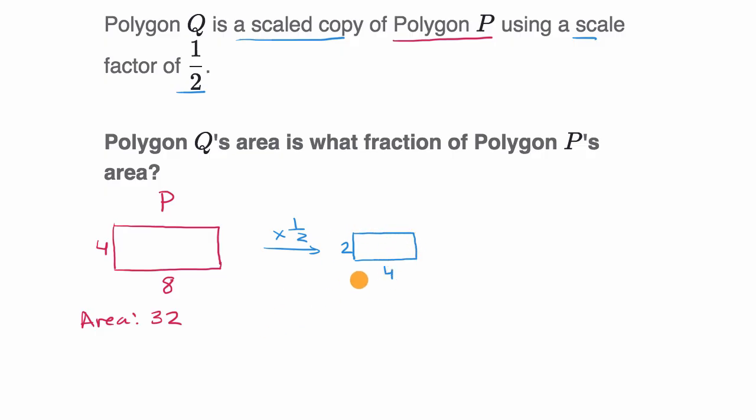And now what is our area going to be? Well our area, and this is polygon Q, our area is going to be two times four, which is equal to eight. So notice, polygon Q's area is one fourth of polygon P's area.